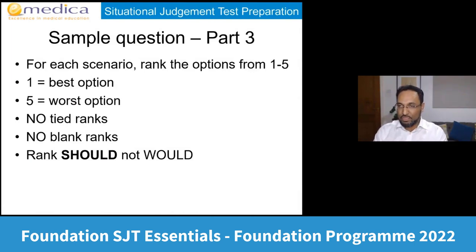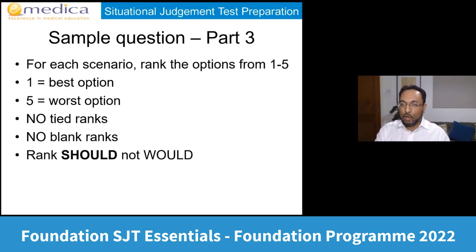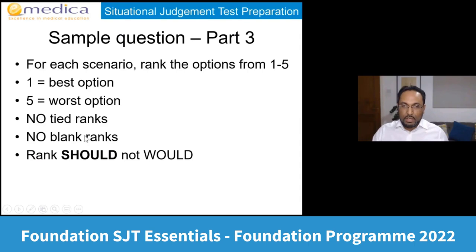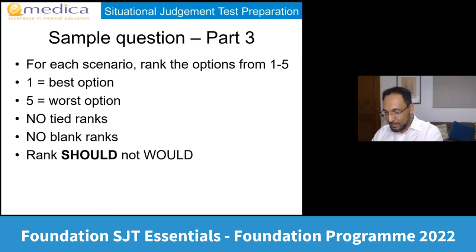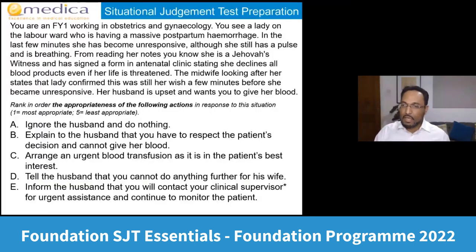Part three: ranking questions. There are 37 scenarios — also the most scenarios of any section. For each scenario, there are five options and you rank them from one to five, with one being the best or most appropriate and five being the worst or least appropriate. You can't have tied ranks. It's possible to leave blank ranks but don't — you'll get no marks for blank positions. They ask you to rank what a good doctor should do, which isn't always what you personally would do.